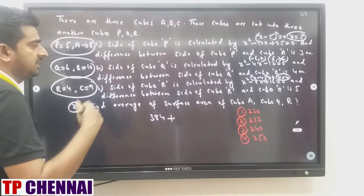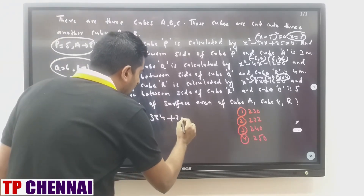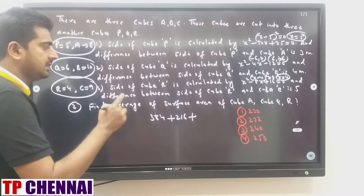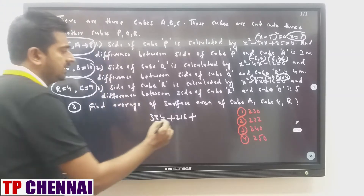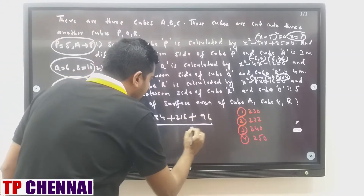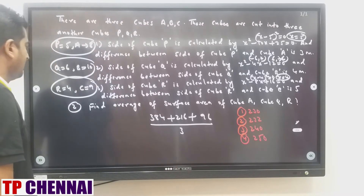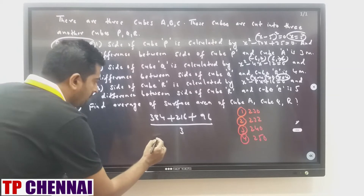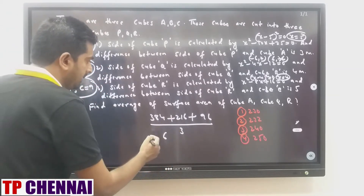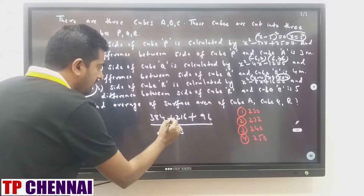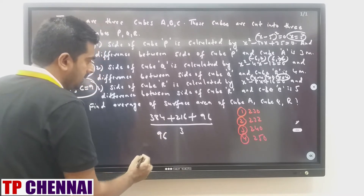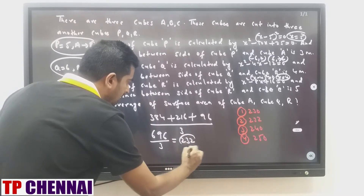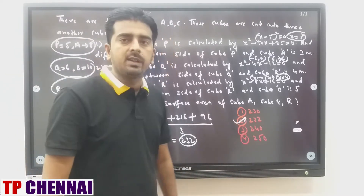Cube Q: side = 6, 6² = 36, 36 × 6 = 216. Cube R: side = 4, 4² = 16, 16 × 6 = 96. Average = (384 + 216 + 96) / 3 = 696 / 3 = 232. Answer is the second option.